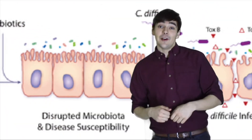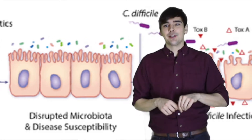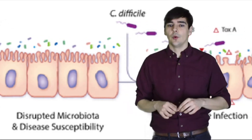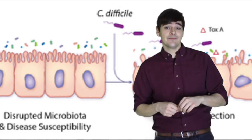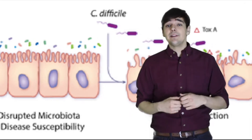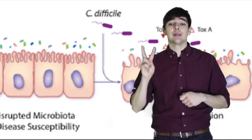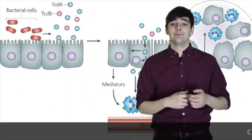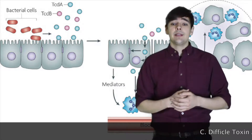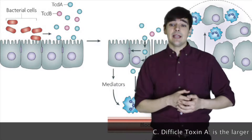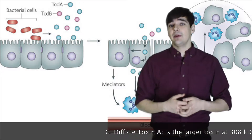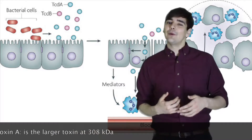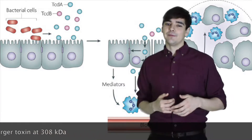Under environmental stress conditions, such as the presence of antibiotics or low concentrations of biotin, C. difficile produces two virulent toxins, A and B. TcdB is the primary virulent factor in CDI and will be the focus of the rest of this video.